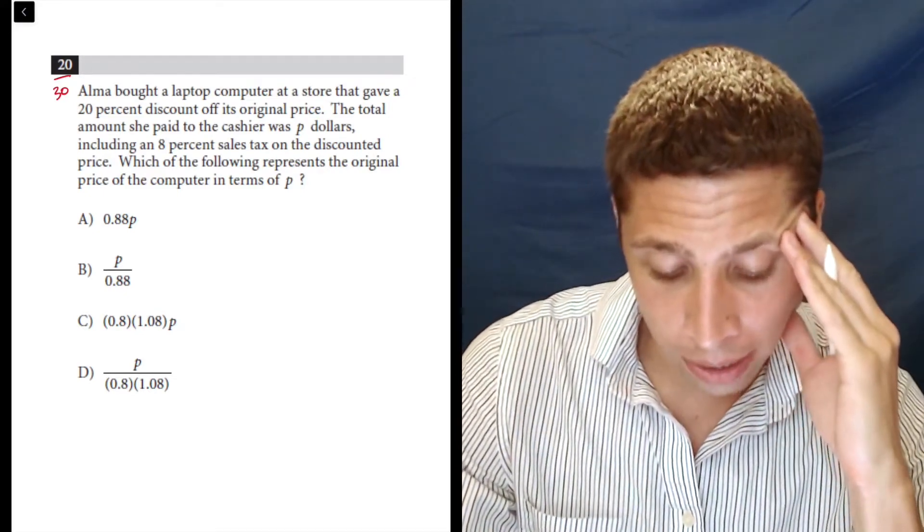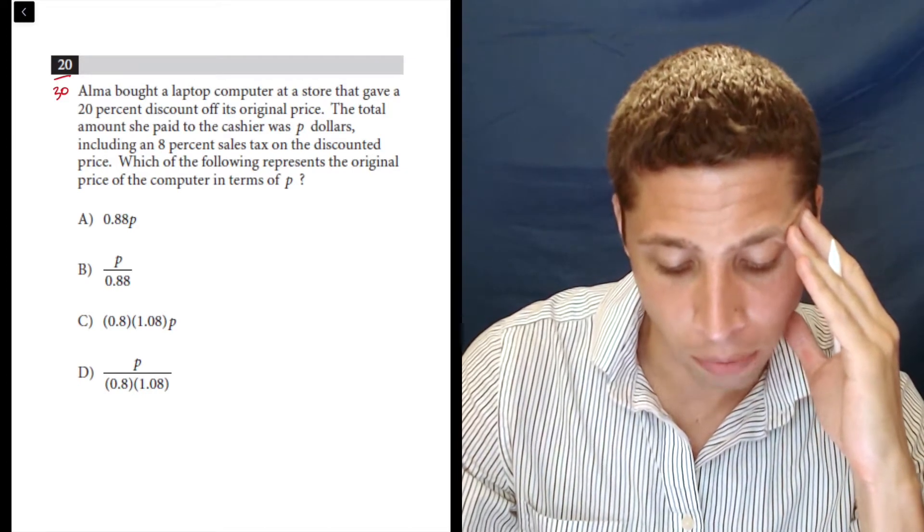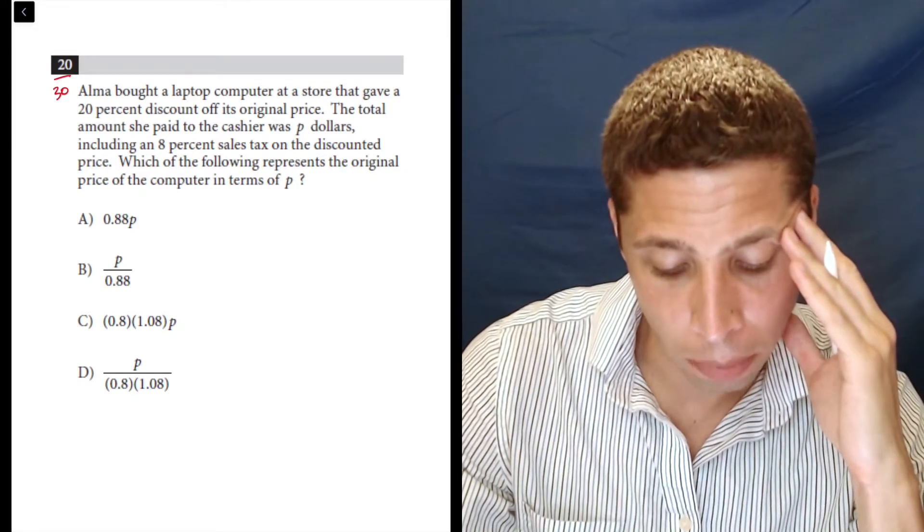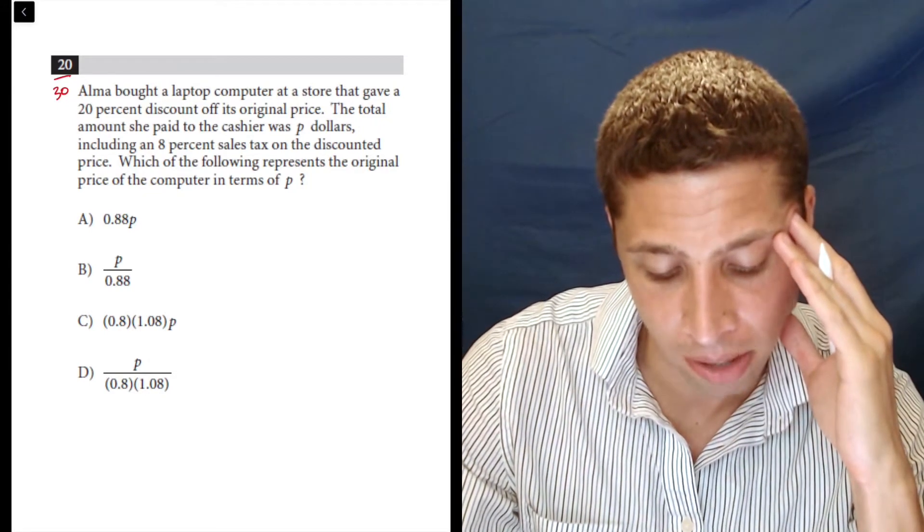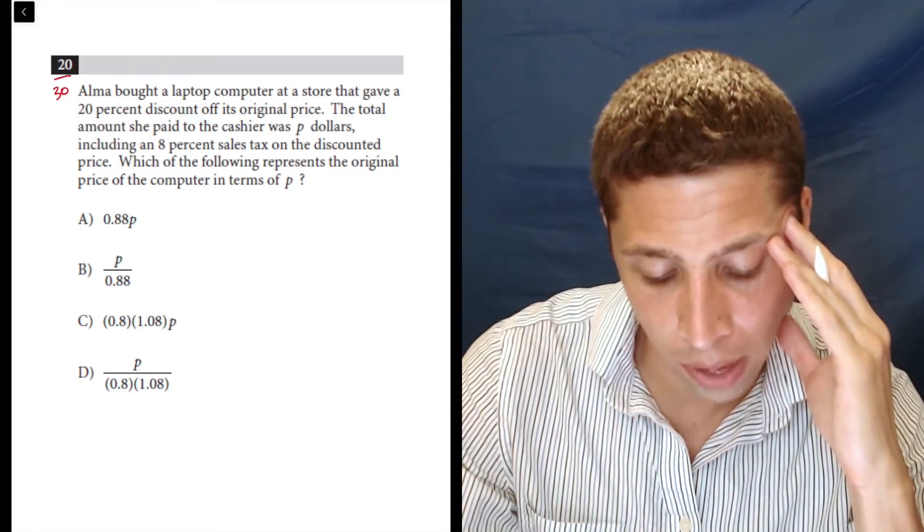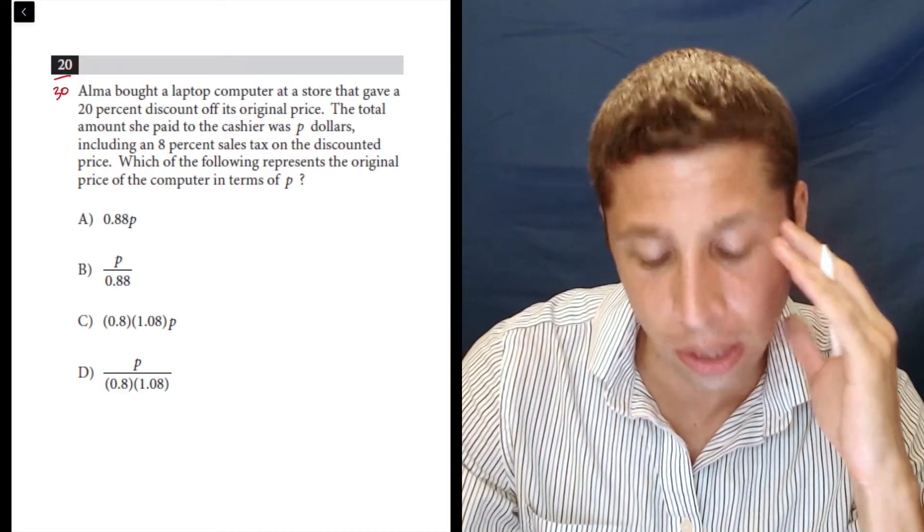Alma bought a laptop computer at a store that gave a 20% discount off its original price. The total amount she paid to the cashier was P dollars including an 8% sales tax on the discounted price. Which of the following represents the original price of the computer in terms of P?